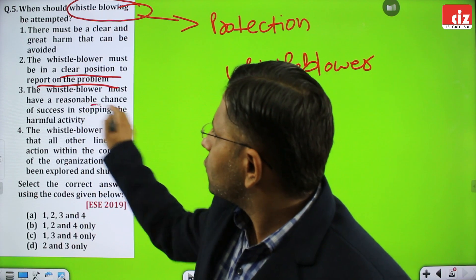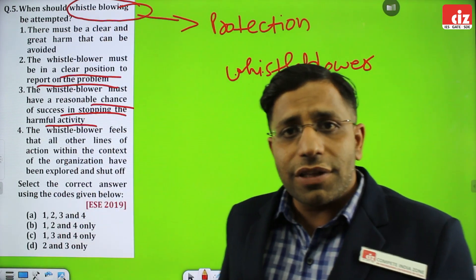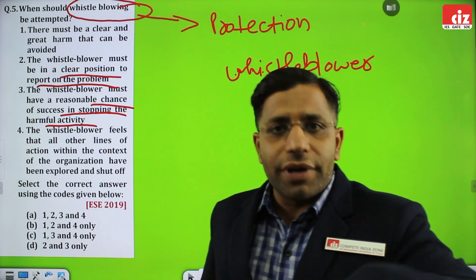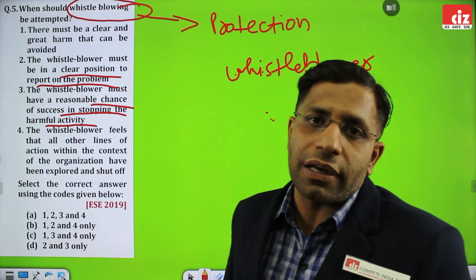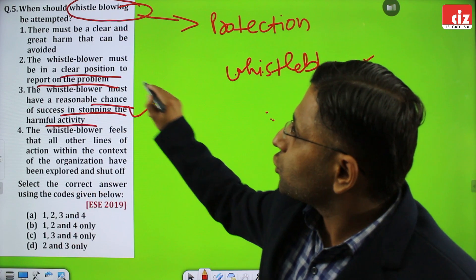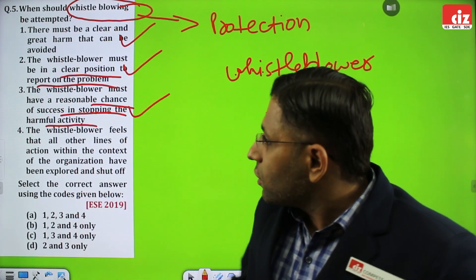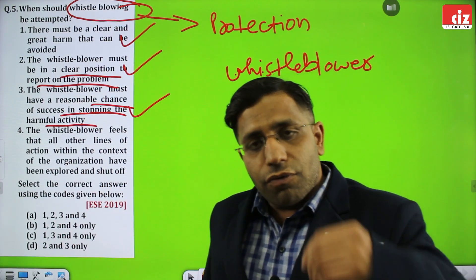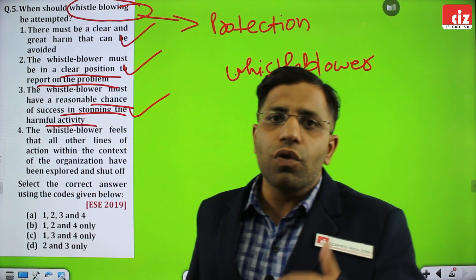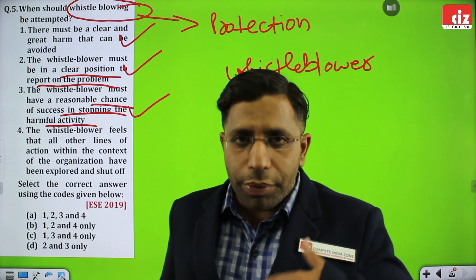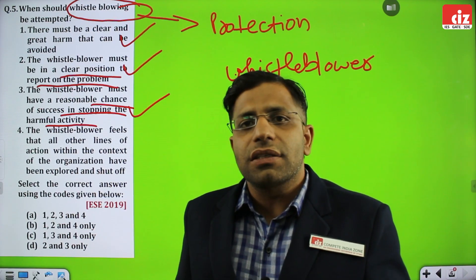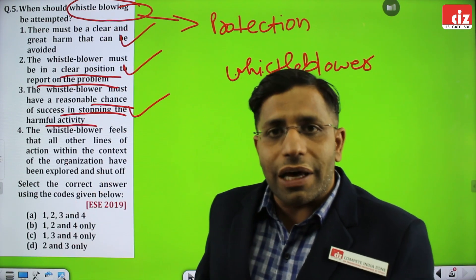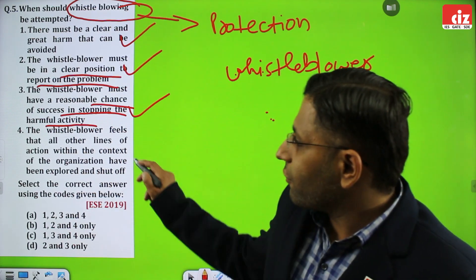The third condition: the whistleblower must have a reasonable chance of success in stopping the harmful activity. Obviously this is the objective of the whistleblower — in every situation, to stop the wrong activities happening in the organization. The fourth condition: the whistleblower must feel that all other lines of action within the context of the organization have been explored and shut off. The whistleblower first uses all other available options. In case all other paths are closed, and the last option remaining is to directly report to the authorities, then they will definitely go for this.